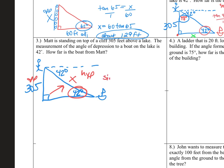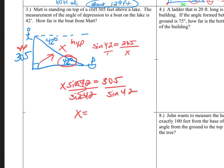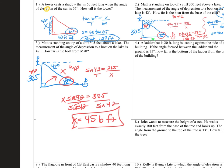So sine 42 equals opposite, which is 305, over my hypotenuse, which is X. Cross multiply: X times the sine of 42 equals 305. Divide both sides by the sine of 42. What's 305 divided by sine 42? About 456 feet. Now think about this — you just found the hypotenuse. Same triangle as the problem before, but we found the hypotenuse. It should make sense that your hypotenuse is a bit longer than the other side, because the hypotenuse is the longest side of a right triangle.